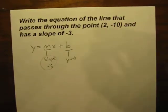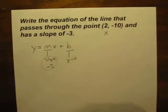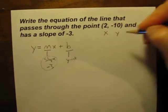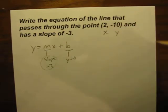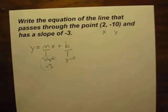When you're given the coordinates of a point, the first number is always your x, the second number is always your y coordinate. So we'll put 2 in for x and negative 10 in for y.